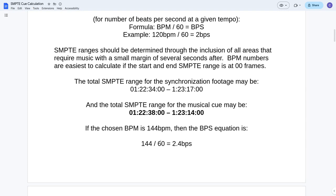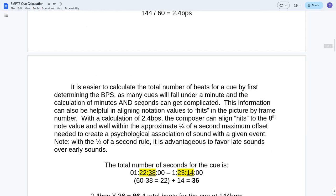If the chosen beats per minute is 144 beats per minute, then the beats per second equation is 144 divided by 60. And that gives us a beats per second of 2.4 beats per second. And that's very important to know as you're considering a frame number later on to decide how you're going to determine your hit on the beat. It is easier to calculate the total number of beats per cue by first determining the beats per second, as many cues will fall under a minute.